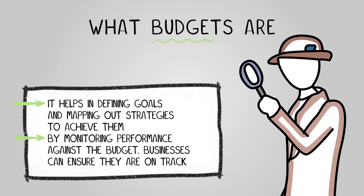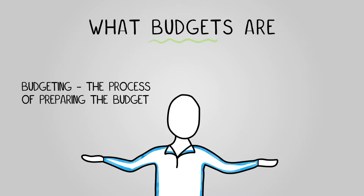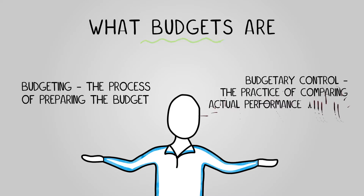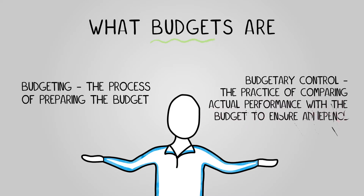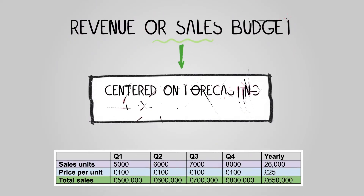There are two main terms related to budgets that you should understand: budgeting, which is the process of preparing the budget, and budgetary control, which is the practice of comparing actual performance with the budget to ensure adherence and make adjustments if needed. Let's now explore four different examples of budgets.